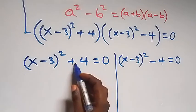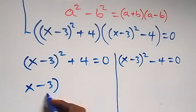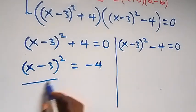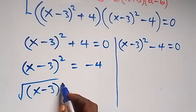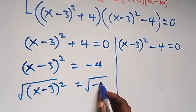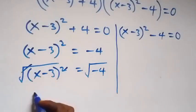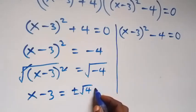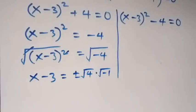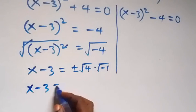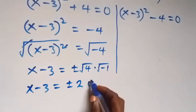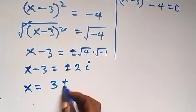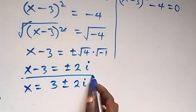From the first case, we take plus 4 to this side: x minus 3 squared equals negative 4. Taking the square root on both sides, square root of x minus 3 squared equals square root of minus 4. The square root cancels on the left, and on the right we write it as plus or minus root 4 times root of minus 1. This is the same as x minus 3 equals plus or minus 2i, since root of minus 1 is i. So we have x equals 3 plus or minus 2i — two complex solutions.